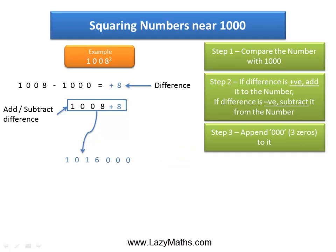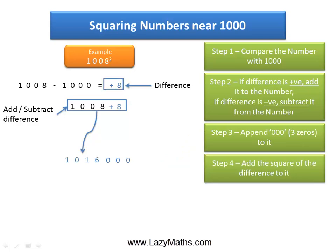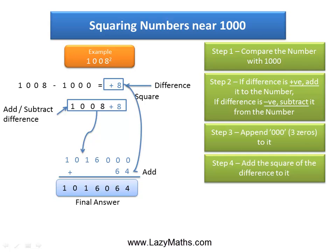As the last step, we simply square the difference 8. 8 times 8, or 8 squared, is 64, and we add that to 1,016,000 to get the final answer of 1,016,064. So 1008 squared is equal to 1,016,064. And that's it.